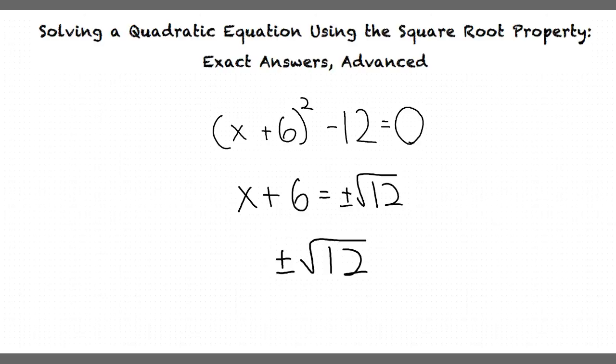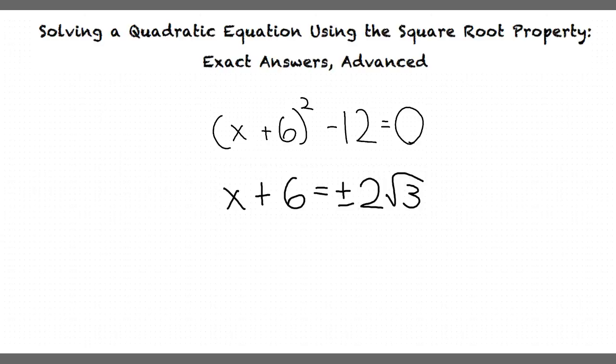Next, we will simplify our square root. We can break down 12 into 4 times 3. Since the square root of 4 is 2, this means that our square root can be simplified to 2 times square root of 3. We now have x plus 6 equals positive or negative 2 times square root of 3.